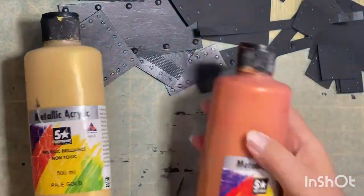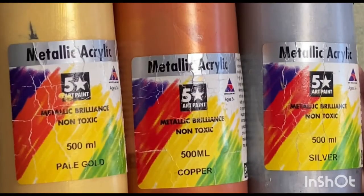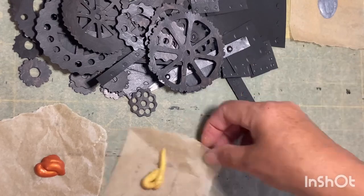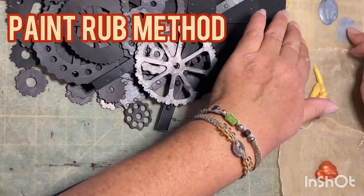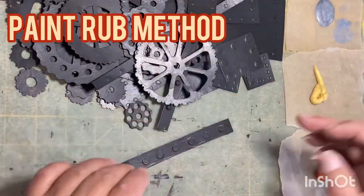To create the metal effect, I've got three colors in metallic acrylic: one's pale gold, one's copper, and one is silver.